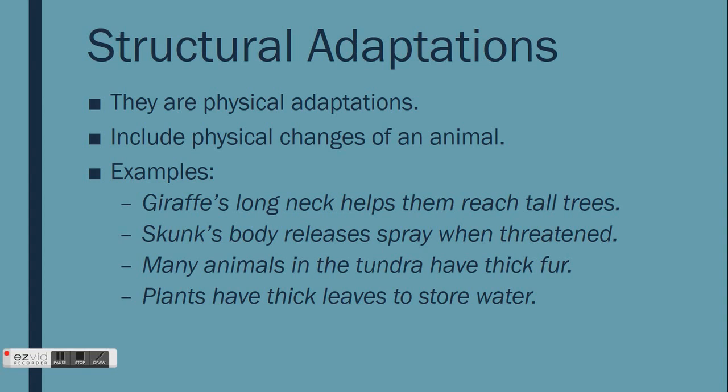For example, giraffes have long necks which help them reach tall trees that are found in the grassland biomes. Another example of a structural adaptation is the bad-smelling spray that skunks release from their bodies when they feel threatened by predators. To stay warm in the tundra biome, many animals such as the musk ox have thick fur to keep warm. This is also an example of a structural adaptation.